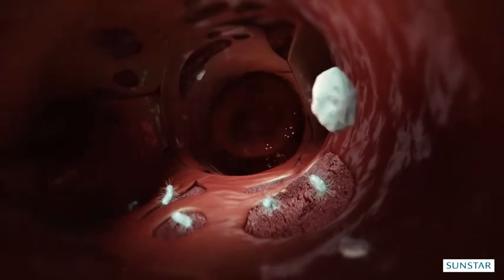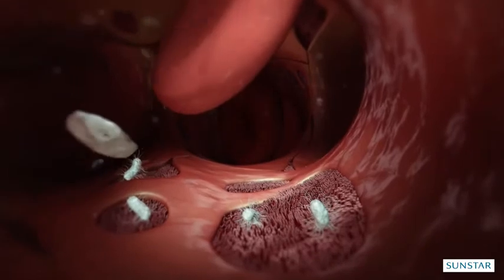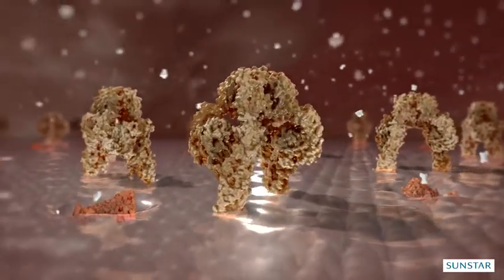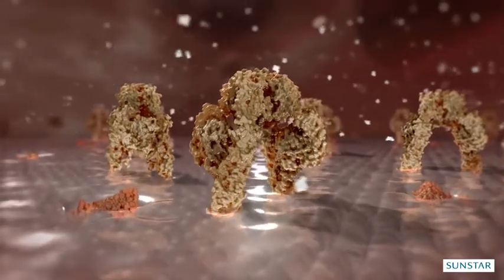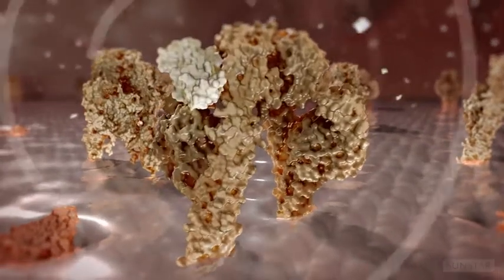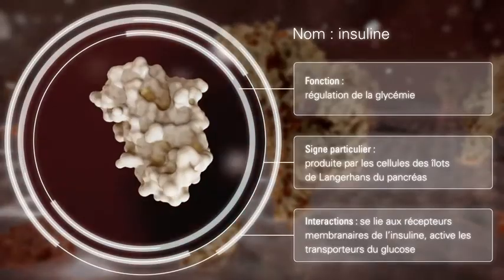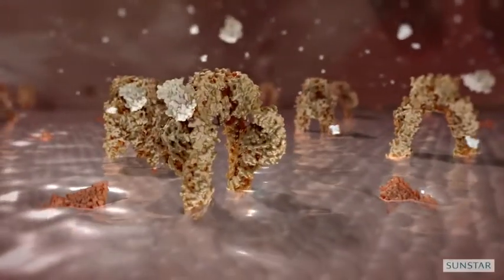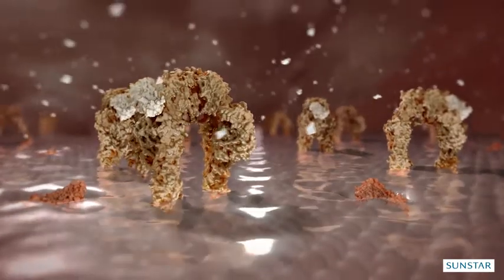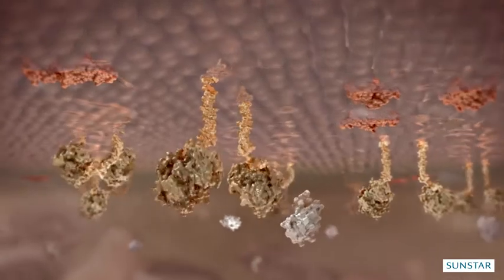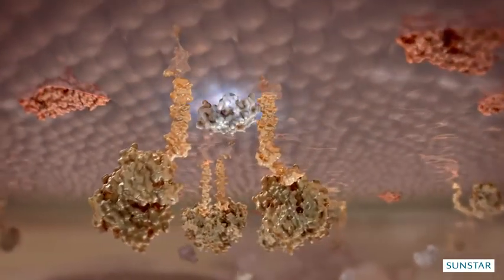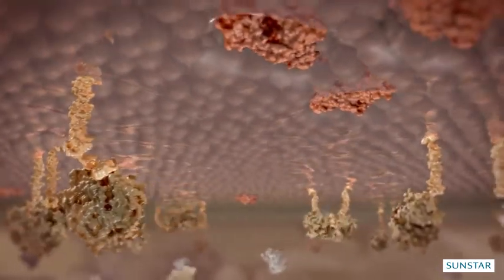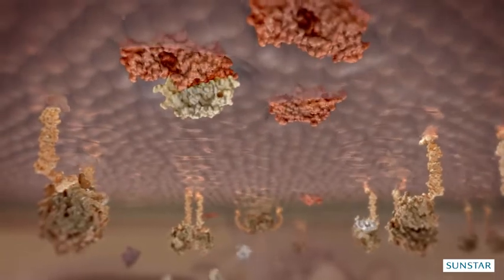L'inflammation systémique déclenchée par la parodontite peut aussi affecter la régulation du taux de sucre sanguin, la glycémie. En temps normal, les récepteurs de l'insuline sur la membrane cellulaire détectent la présence d'insuline dans le sang. Quand l'insuline se lie à ses récepteurs, une cascade de signalisation est déclenchée dans la cellule et active des transporteurs du glucose, permettant au glucose de pénétrer dans les cellules où il est transformé en énergie ou stocké.